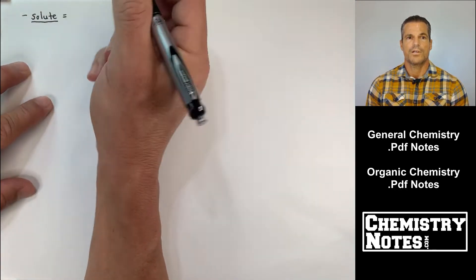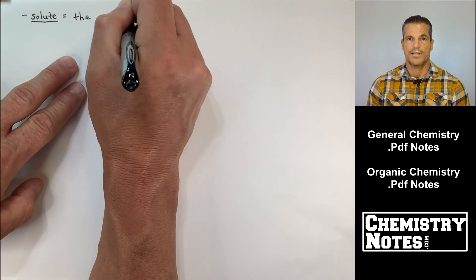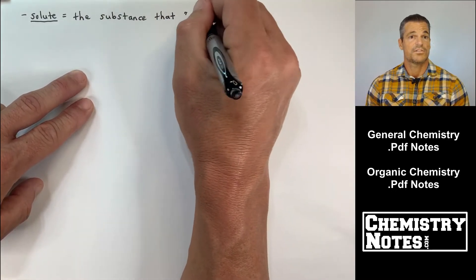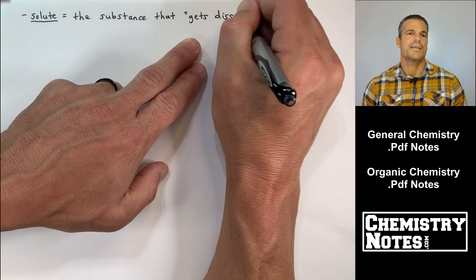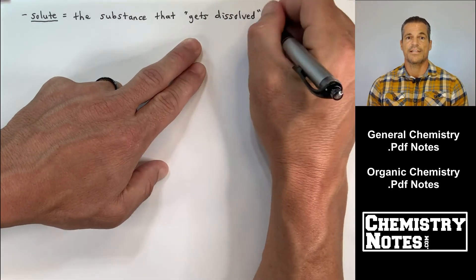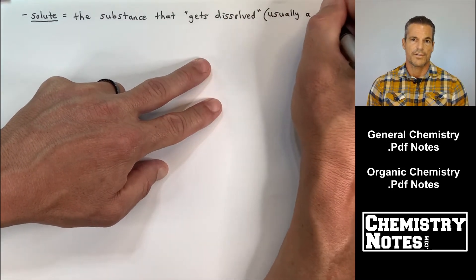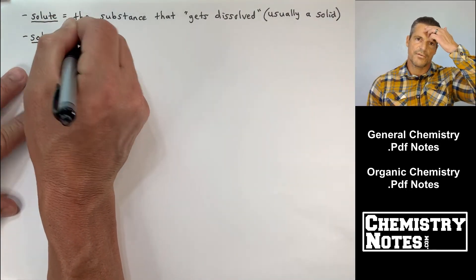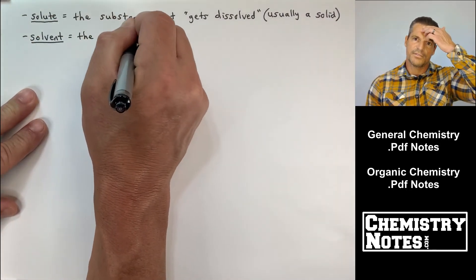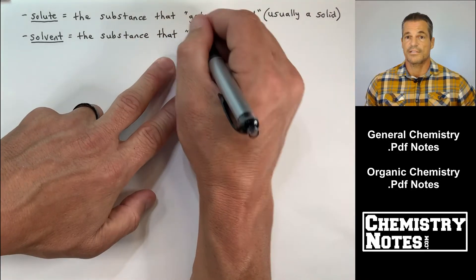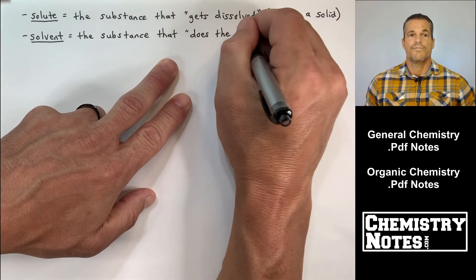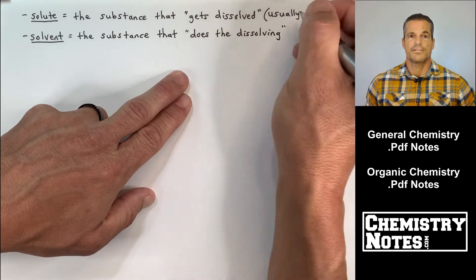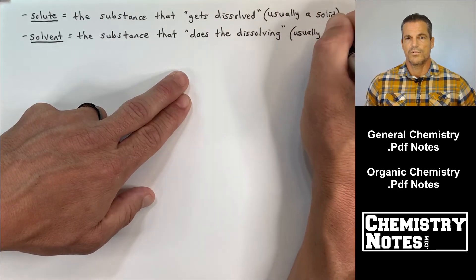All right, so we talked about what a solvent was and that solvent is what does the dissolving. The solute is the substance that gets dissolved. Now in general chemistry this is usually a solid. Okay, so usually in chemistry for our purposes the solute is the substance that gets dissolved and the solvent is the substance that does the dissolving and that's usually water.